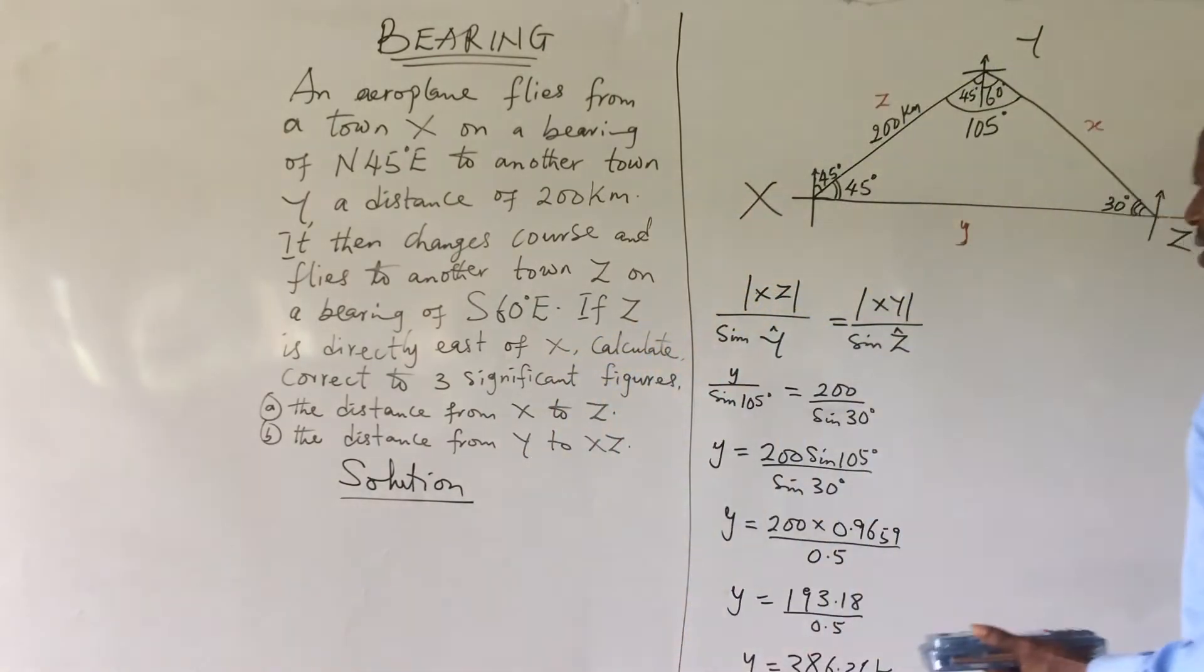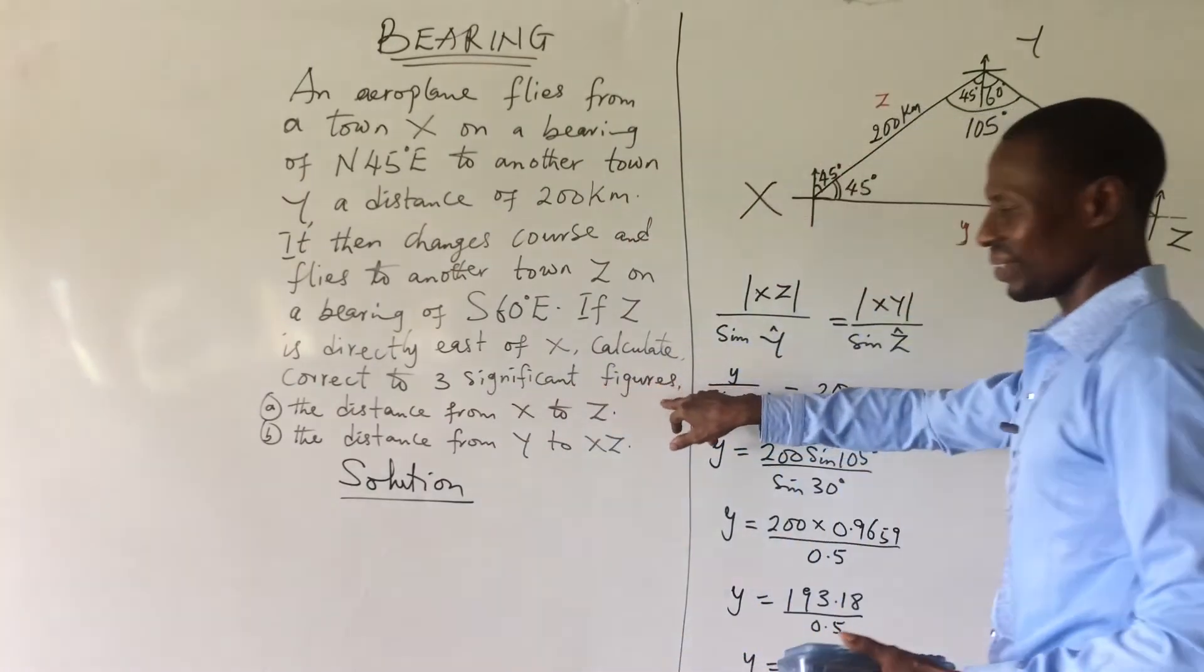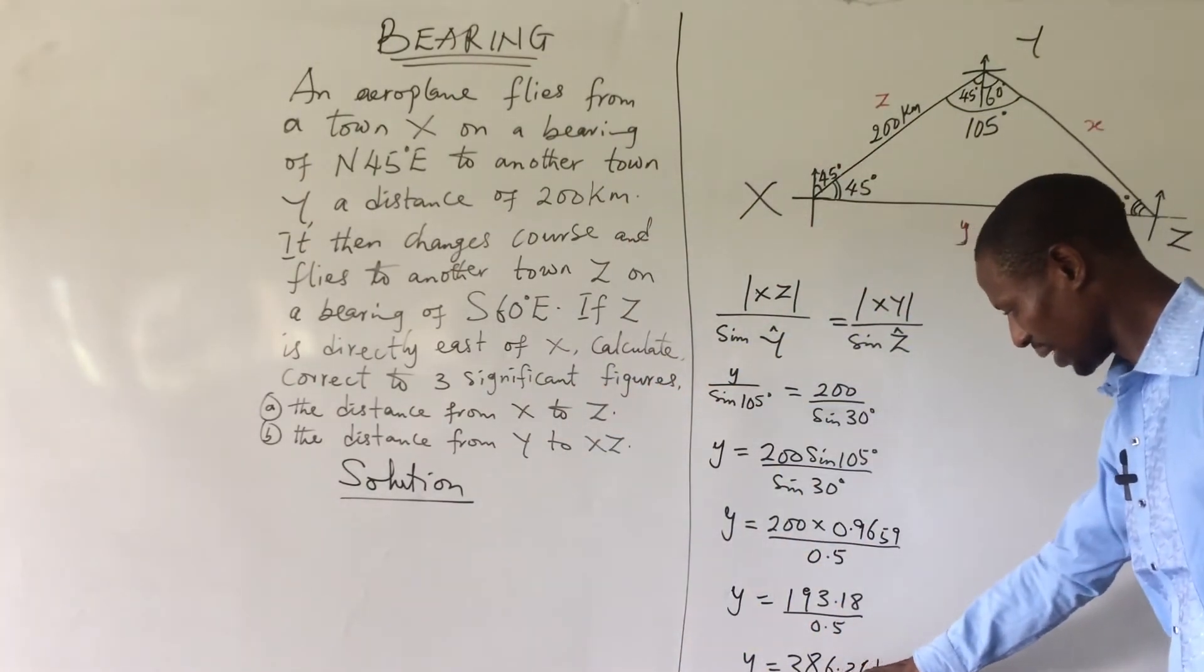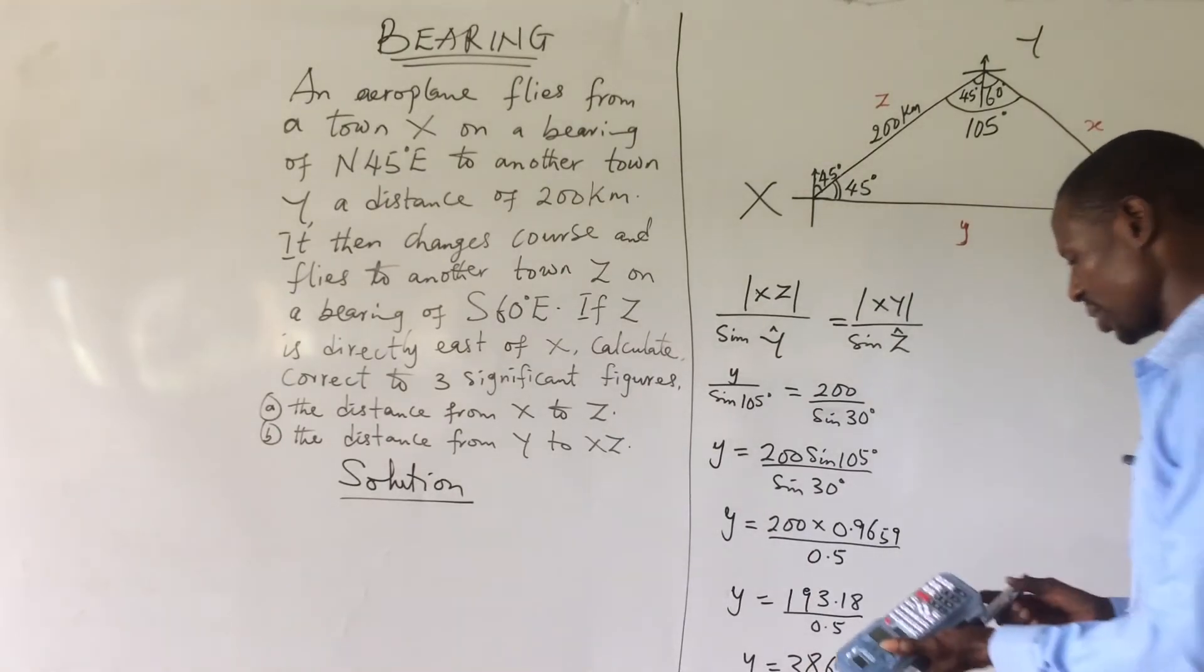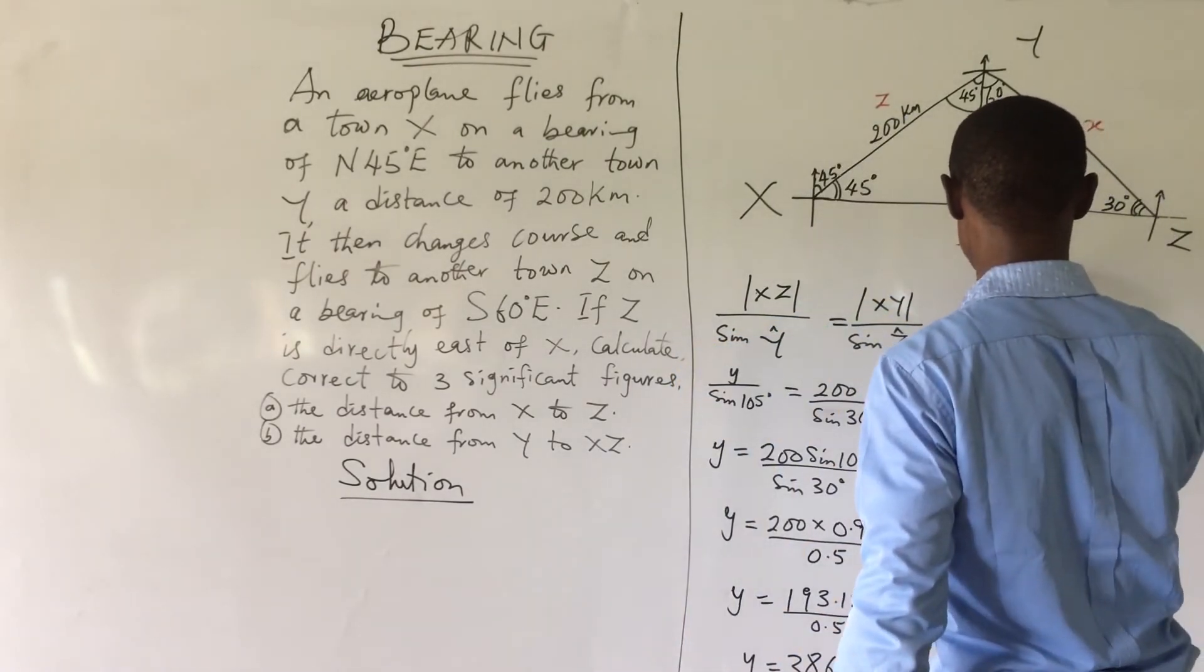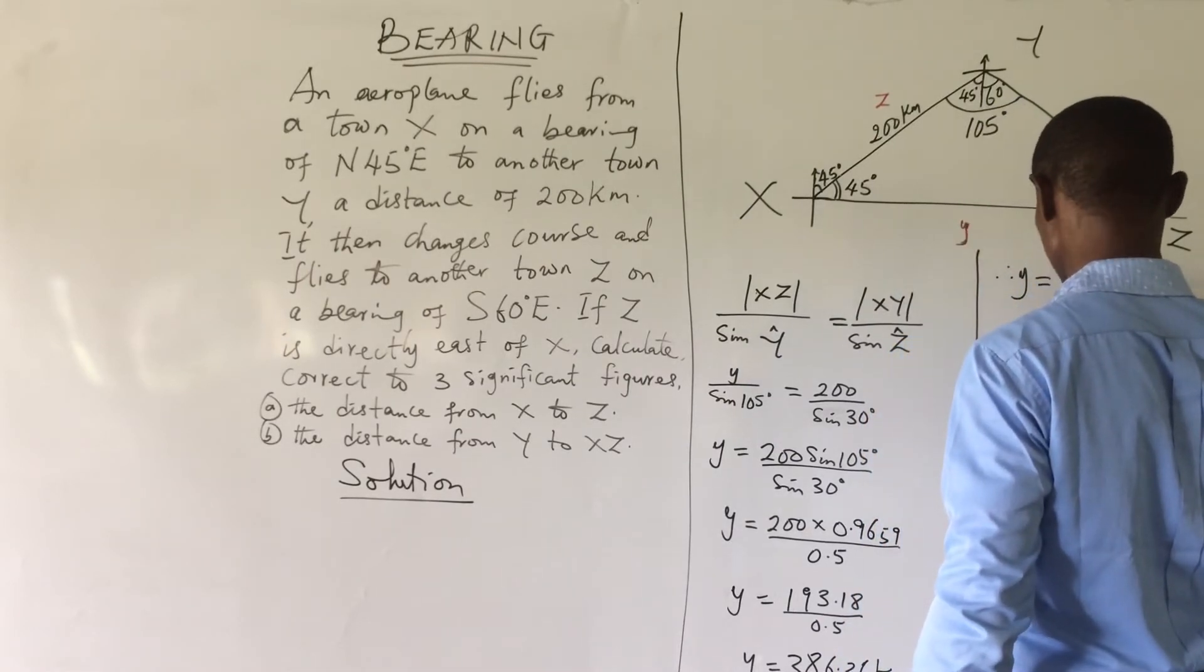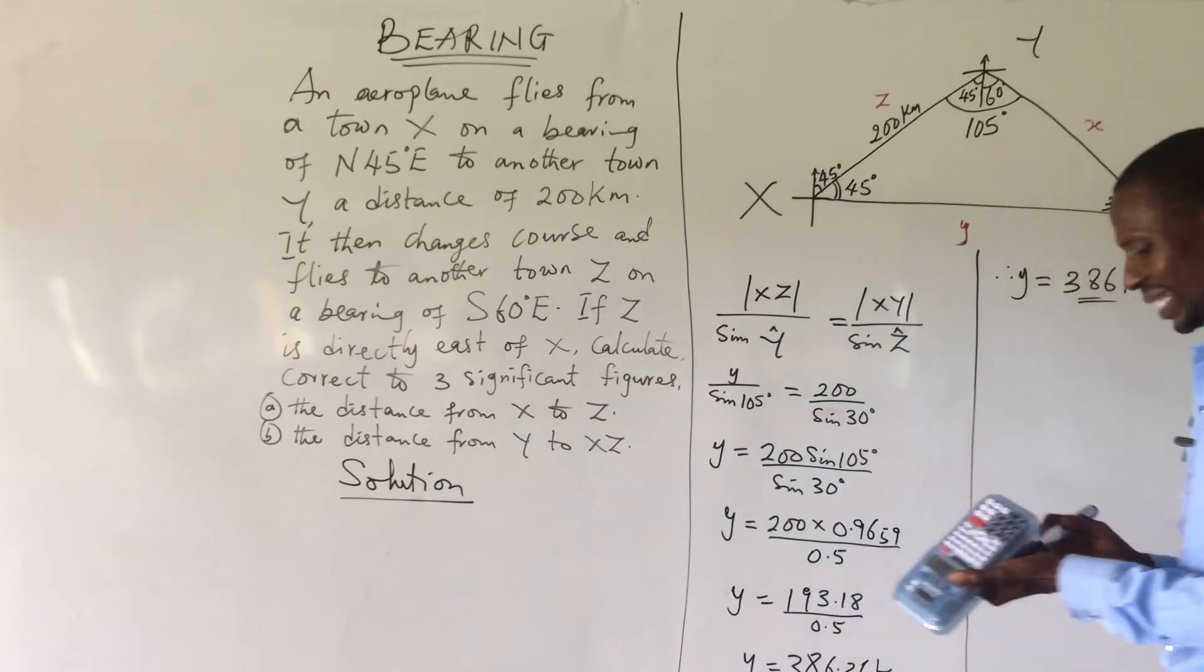But, the question says calculate to three significant figures. We count the first three digits: one, two, three. The next one is not up to five, so we round it down. Automatically, this will give us, therefore, y is equal to 386 kilometers. That is the distance.